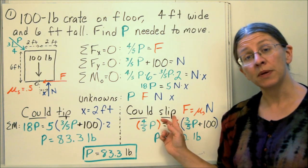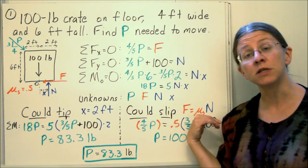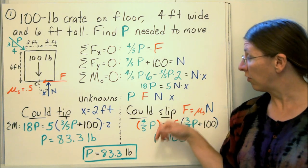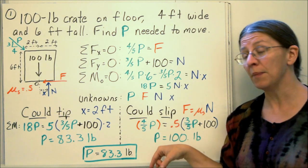It could also slip. My slipping condition is the same one it always is, f is equal to μs times n. I plug that into my equations of equilibrium and I get p equals 100.